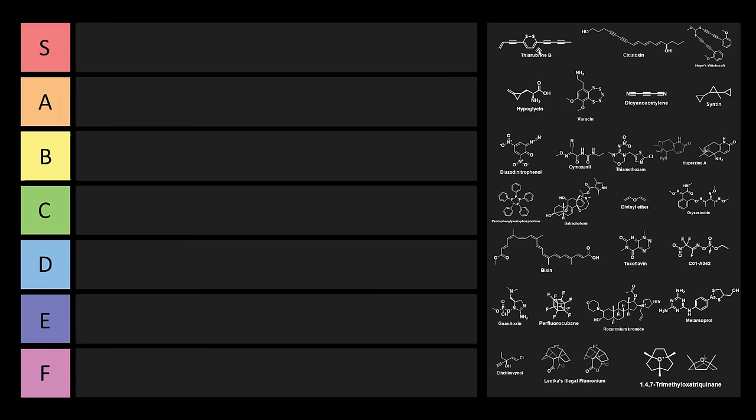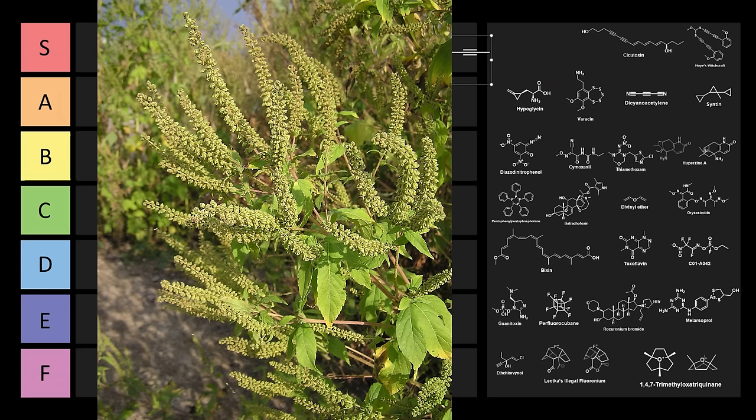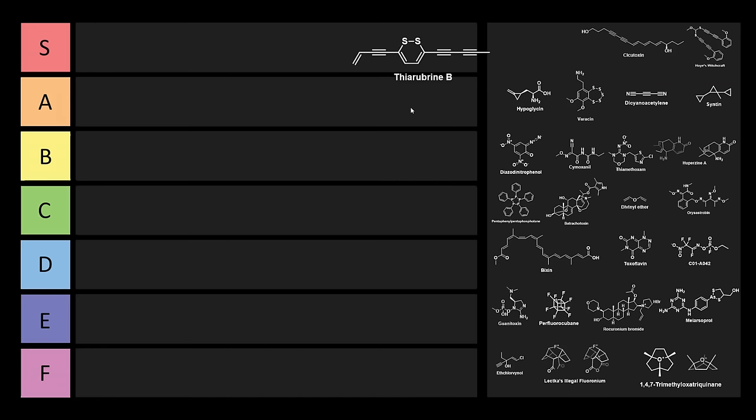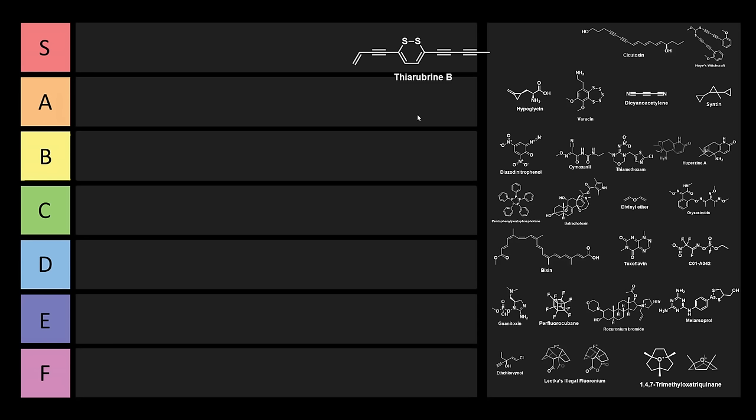The first chemical here is Thiarubrine B. This is a 1,2-dithyene, and this is a chemical that occurs in giant ragweed. The technical name for giant ragweed is Ambrosia trophidia. This plant is used in herbal medicine as an antiseptic, and it's also used to treat intestinal worms and fever.